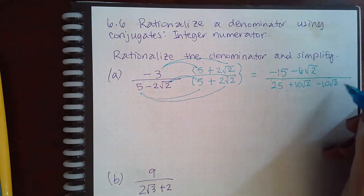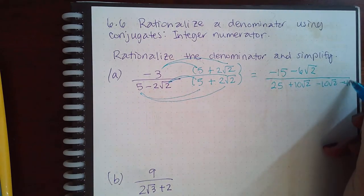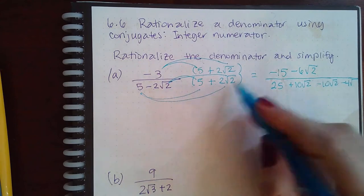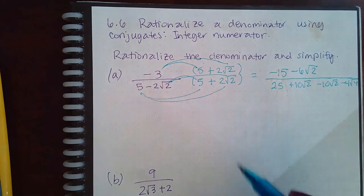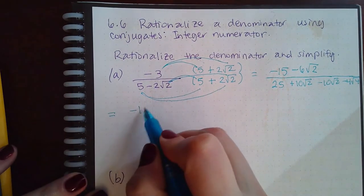So negative 2 times positive 2 is negative 4. And then the square root of 2 times 2, which is 4. And so let's simplify that and see what it looks like.